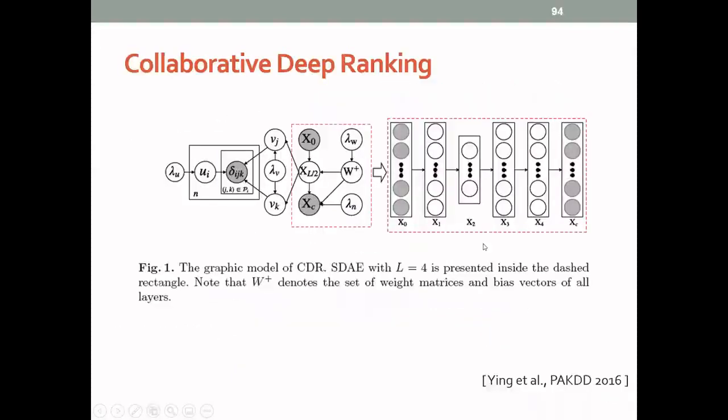And another extension of CDL is to go from predicting the ratings to actually care about the ranking. Because usually in recommender systems, sometimes we care more about the order of the recommended list than the actual ratings. We only care about whether we can rank the actual positive item at the top of the list.